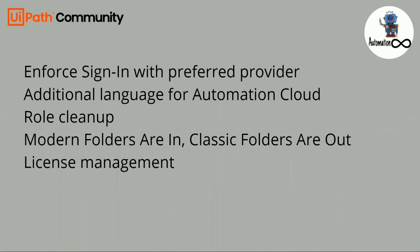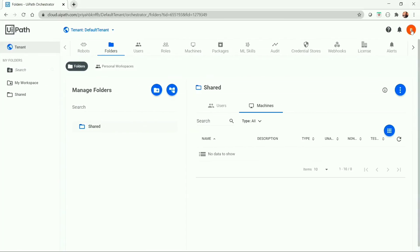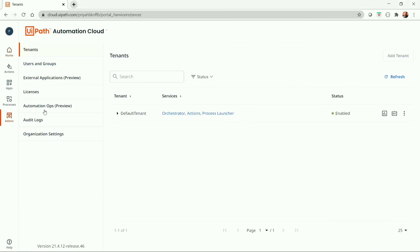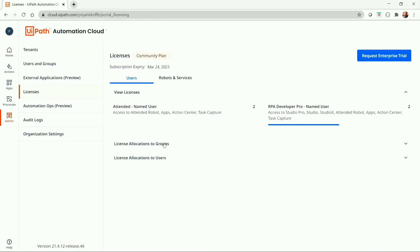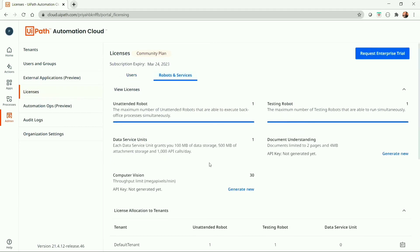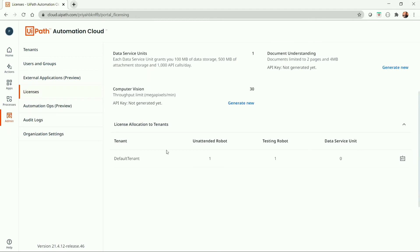The next update is license management. UiPath Automation Cloud offers a robust licensing framework which allows users to access any services from the organization based on their licenses. This removes the overhead from the administrator who previously had to move licenses from one tenant to another, making it easier to manage user licenses across multiple tenants. To explain license management, let's go to Admin and then Licenses. You will find a Robots and Services tab which allows you to distribute your license per tenant.